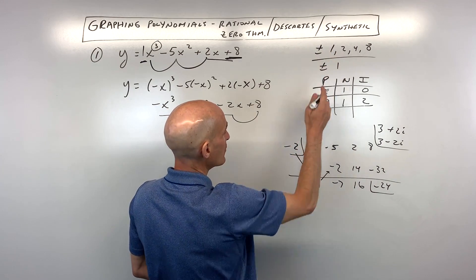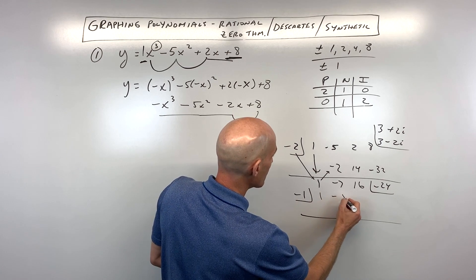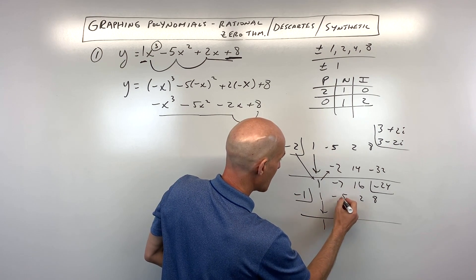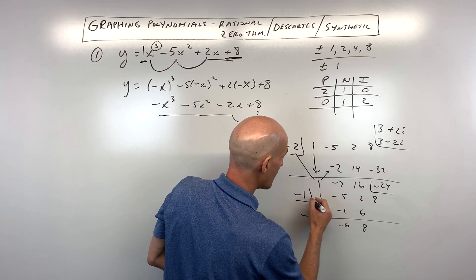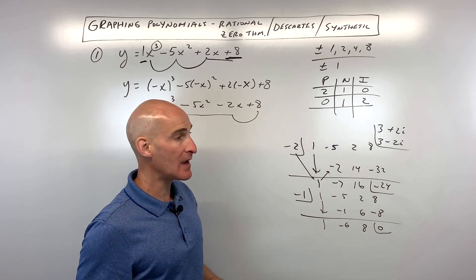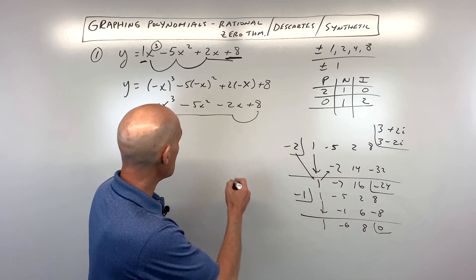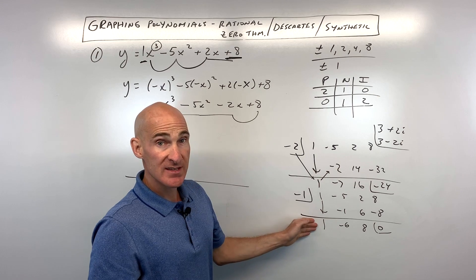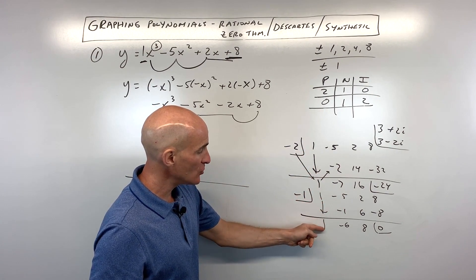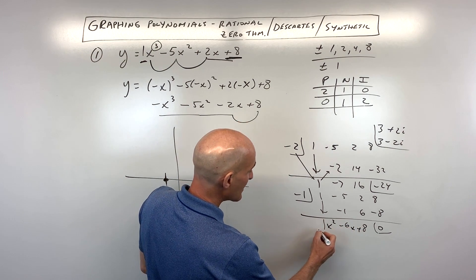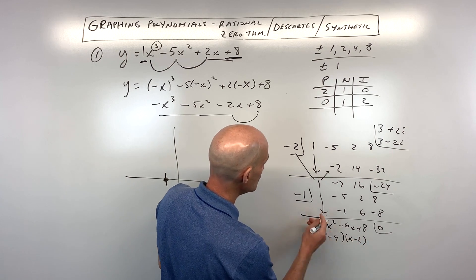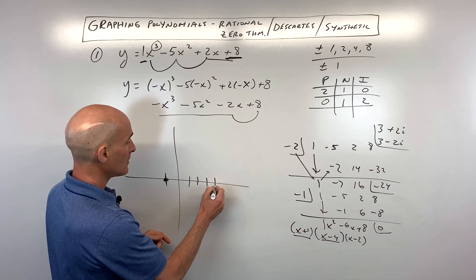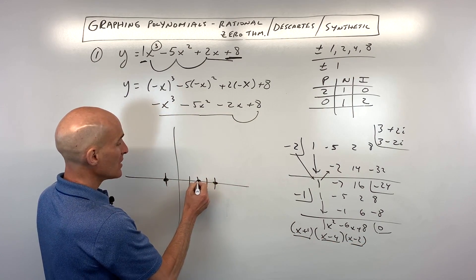So let's try negative 1 — that's one of our possible rational zeros. Start again with our coefficients: 1, negative 5, 2, and 8. Drop down the first number, multiply on the diagonal, add straight down, multiply on the diagonal, add straight down, multiply on the diagonal, add straight down. Here we are getting a zero remainder, which means that negative 1 is a zero. Graphically, it's going to cross the x-axis at negative 1. Synthetic division takes you down one degree — from x cubed down to x squared. We can factor this further: this is going to be x minus 4 times x minus 2 times x plus 1. When you set each factor to zero, you get negative 1, 4, and 2. So now we've found our zeros.